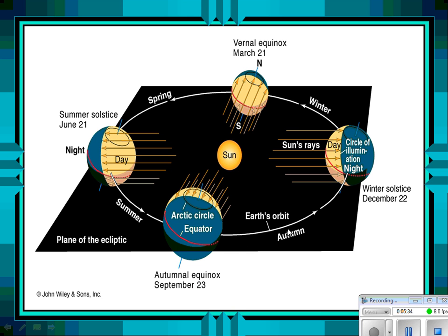Through fall, past Halloween, past Thanksgiving, over towards Christmas — here is the Earth at the winter solstice. The North Pole is pointed away from the Sun, so it gets 24 hours of darkness. The South Pole is pointed towards the Sun, so it gets 24 hours of daylight. Fill in winter solstice in the blank between the Sun and the right picture of the Earth.